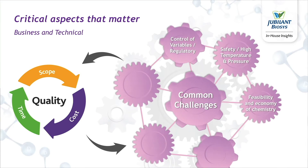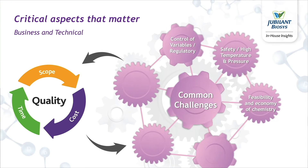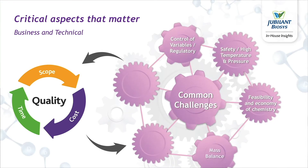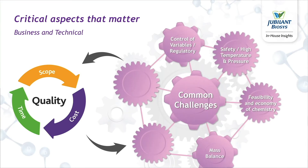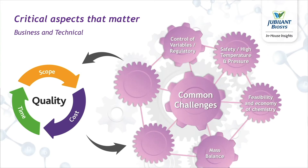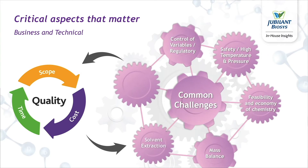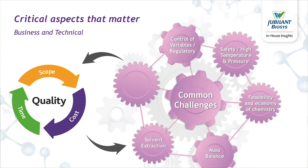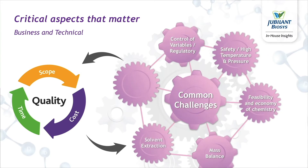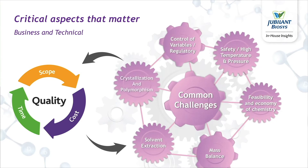Have we considered polymorphism right in the beginning, and should we or should we not? Whether the process is feasible, what is the economy of the chemistry and of the process, what is the atom economy?